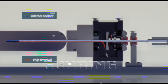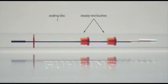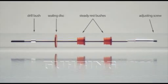An important point when drilling with gun drilling machines is that additional equipment is required: steady rest bushes, a sealing disc, a drill bush, and an adjusting screw.